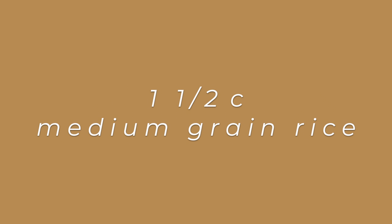To make a rice with sausages, you will need 1.5 cups of medium grain rice and 2 medium onions.